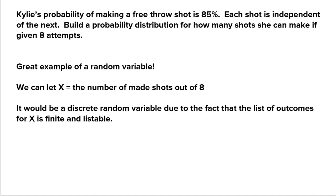This is a great example of a random variable. We can allow X, the random variable, be the number of shots that she makes out of eight. This would be discrete. Why? Because I can list all of the outcomes. If she's given eight attempts, she can make zero, one, two, three, four, five, six, seven, or all eight of them. She can't make nine shots — she's only shooting eight. So this is discrete, all whole numbers, and I could make a finite list of all the outcomes.